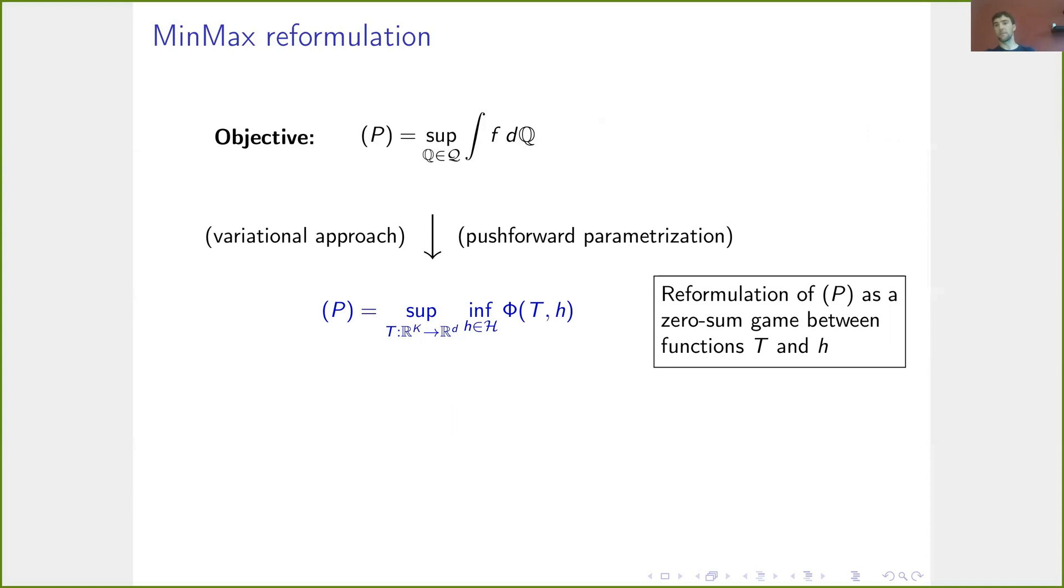Here, T is just some arbitrary measurable map. The problem here is to enforce the constraint that Q, this measure Q represented by the mapping T is in the set Q, we have to additionally use some kind of inner infimum problem. This inner infimum problem can be chosen by the variational representation for the set of measures Q.